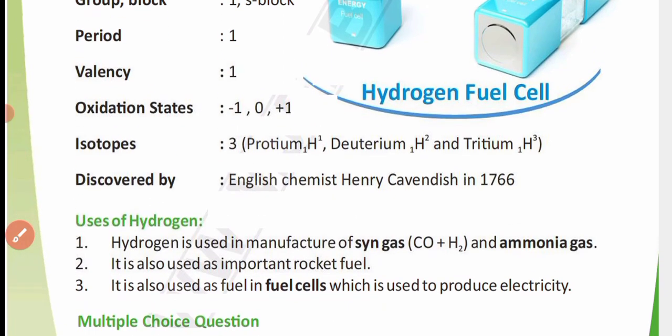Uses of hydrogen: hydrogen is used in the manufacture of syngas and ammonia gas. It is also used as an important rocket fuel, and as a fuel in fuel cells which are used to produce electricity.